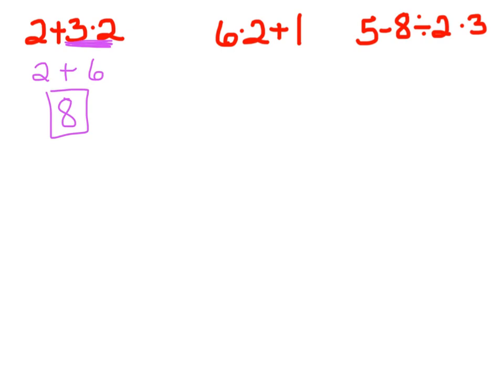We have 6 times 2 plus 1. PEMDAS says that multiplication has to go first, so 6 times 2 is 12 plus 1, which is 13. You have to go in that order because if you went 2 plus 3 is 5 and then 5 times 2 is 10, you would not get 8. But that's wrong.